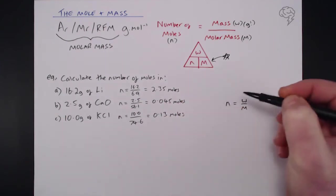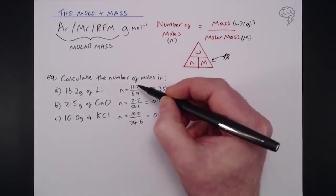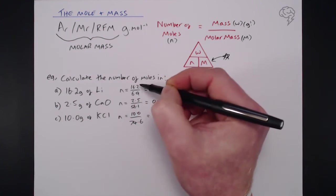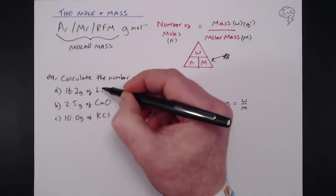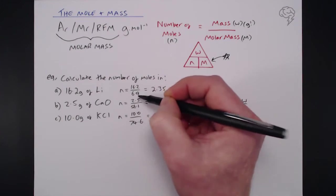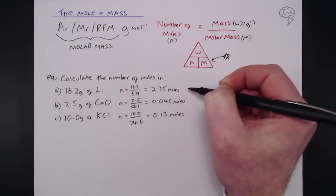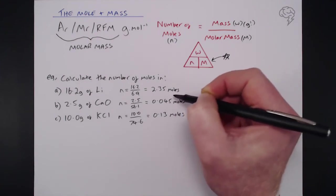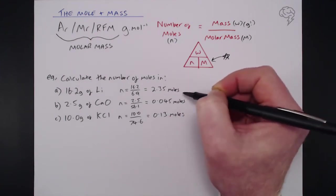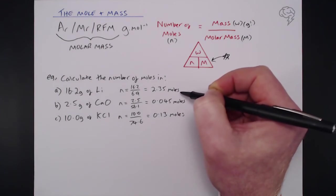Okay so for each of these I've used this equation here. Taken the mass 16.2 and the molar mass in this case the AR because it's lithium we're dealing with which is 6.9, which gives us 2.35 moles. I always write the units, even though it's moles I always write that afterwards just so it's clear what it is I've been calculating.